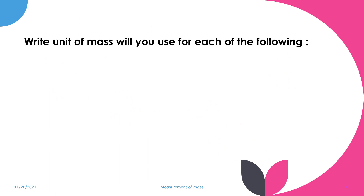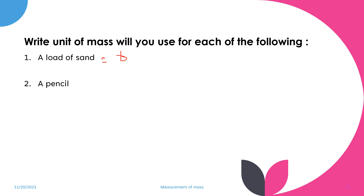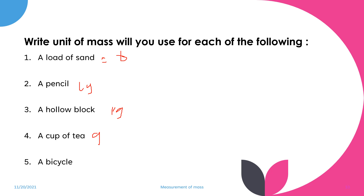What unit of mass would you use for each of the following? A load of sand — we can use tons (T), since a load of sand is about several metric tons. A pencil — centigrams (cg). A hollow block — kilograms (kg). A cup of tea — grams (g). A bicycle — kilograms (kg).